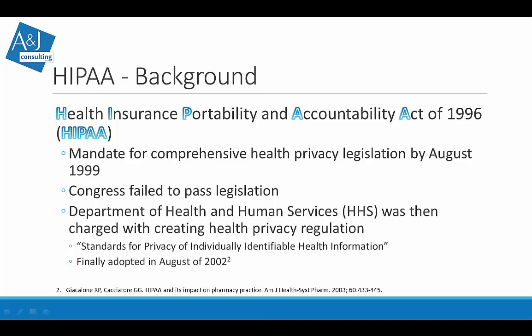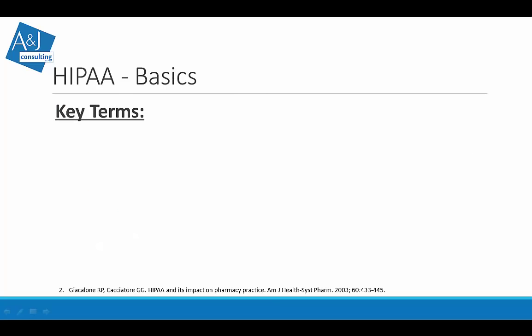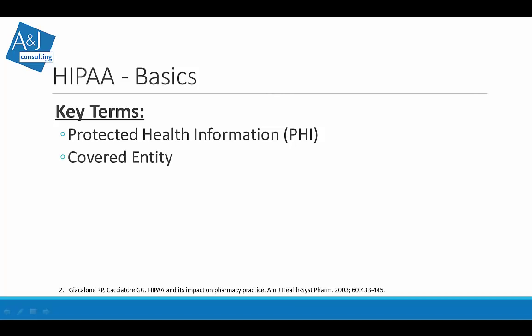Based on HIPAA of 1996, it took six years to finally get health privacy regulation. Key terms that came out of this regulation include: protected health information (PHI), covered entity, privacy notice, and disclosure. PHI is something you've likely encountered if you've worked in a pharmacy or hospital, or even visited a doctor's office in the last decade — those extra forms you sign.